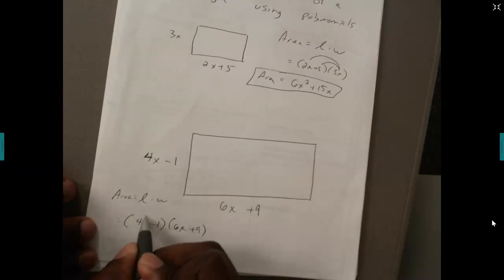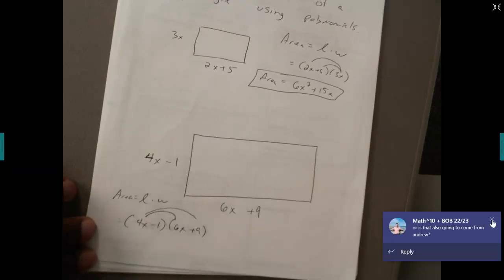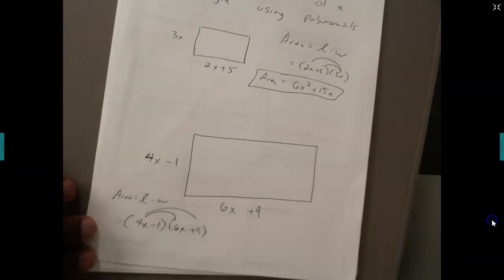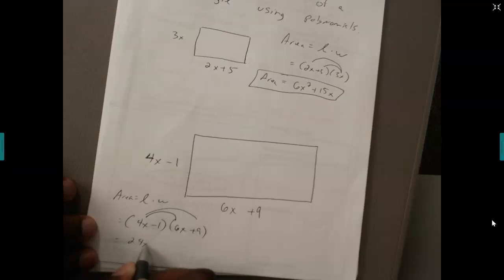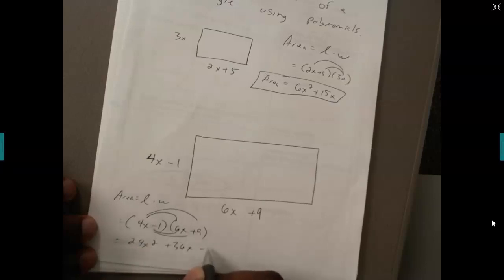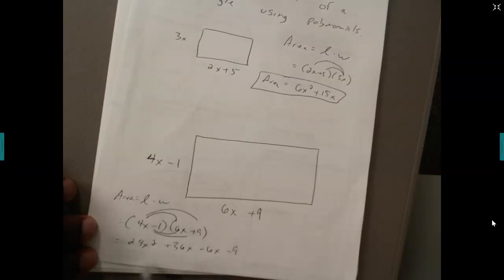To finish finding the area, you distribute or better yet, you FOIL together these two binomials and you will get 4 times 6 should be 24x to the second, 4 times 9 is 36x, then I distribute the 1 so it's going to be negative 6x take away 9.